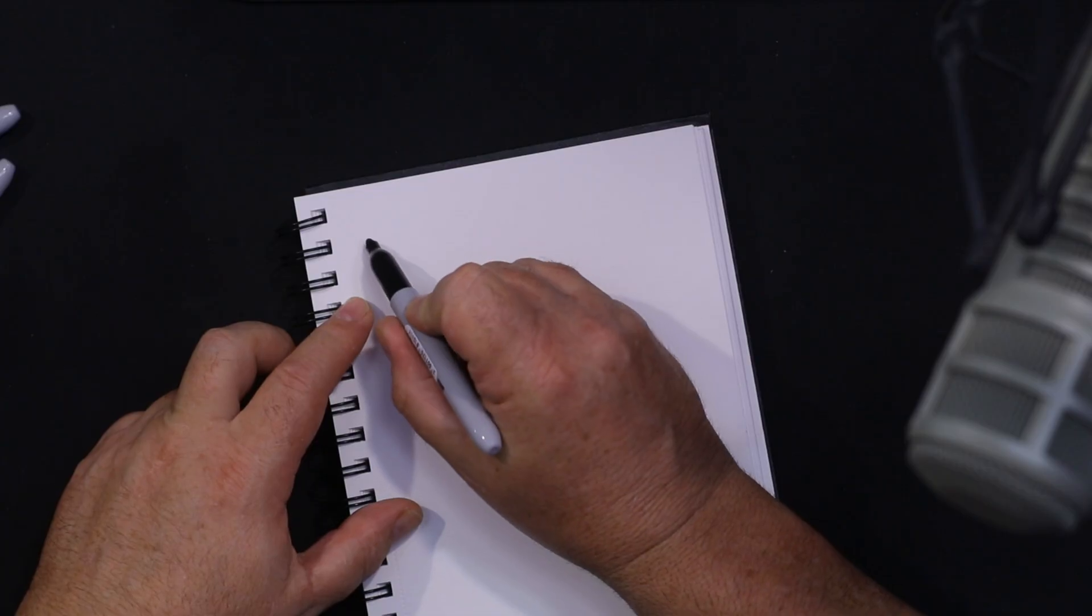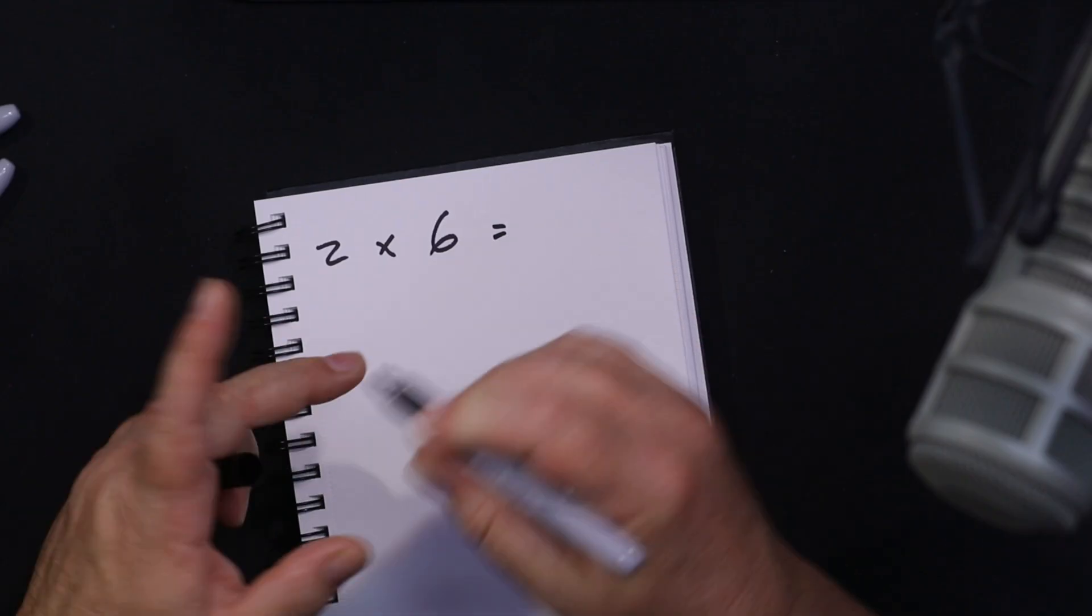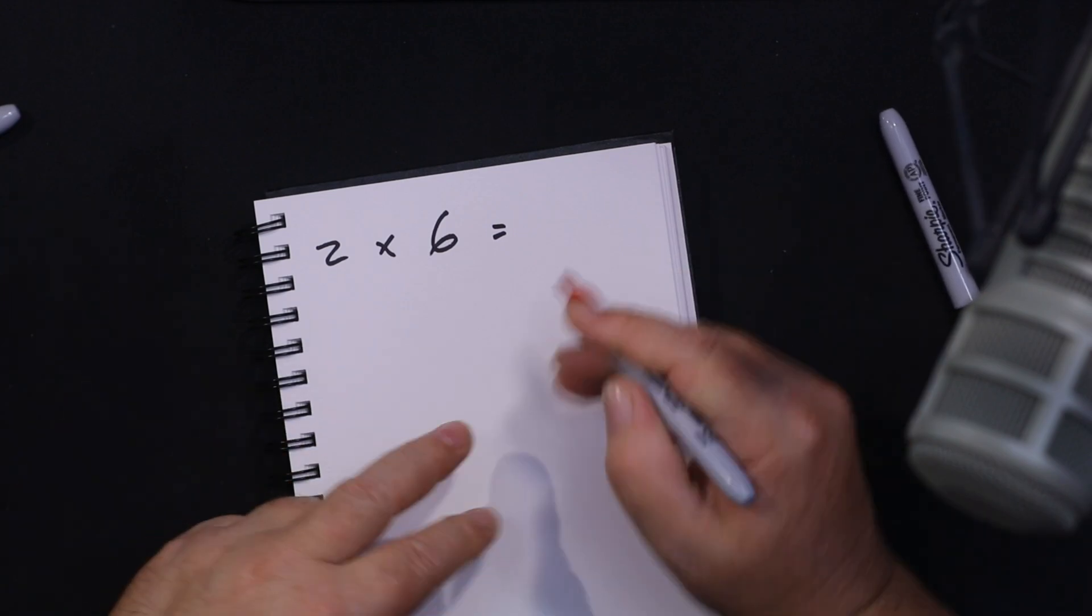So let's do a test and see if you can work this one out. What is two times six? Do you know the answer to two sixes? Now we're taught that at primary school. The answer is 12, absolutely right.